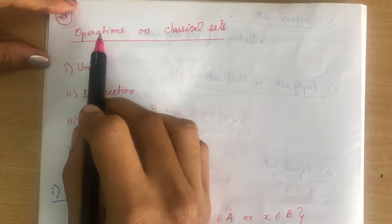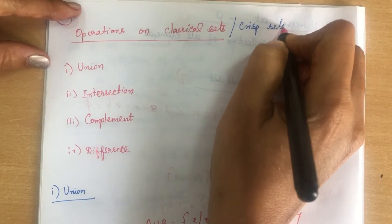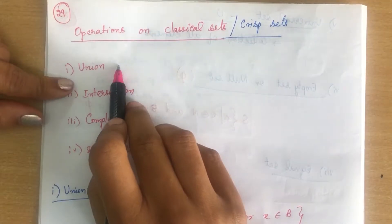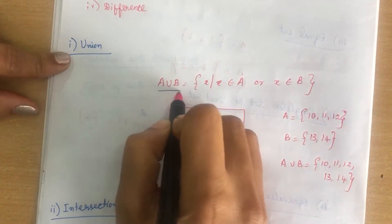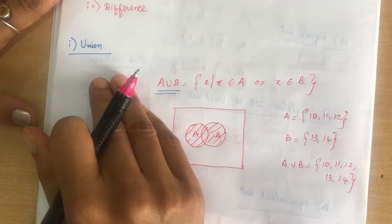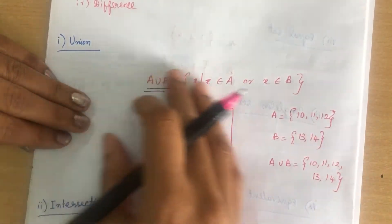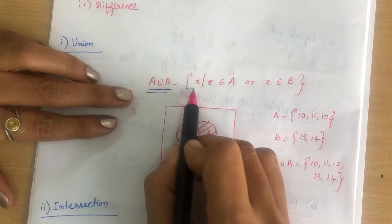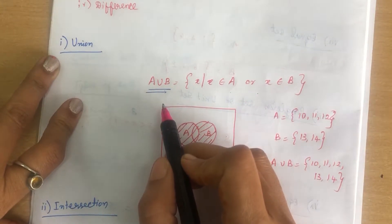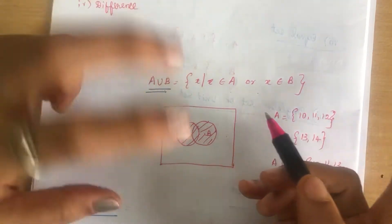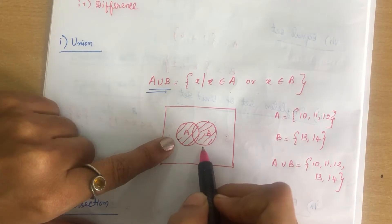Next we see the operations you can perform on classical set, also called crisp set. There are 4 operations: union, intersection, complement, and difference. For union, A union B contains elements in A or in B. The union of a set contains all elements from A and also from B. For example, if A = {10, 11, 12} and B = {13, 14}, then A ∪ B = {10, 11, 12, 13, 14}. If common elements occur, they appear only once in the union.